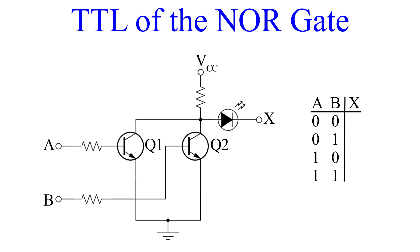On to the NOR gate. Let's turn on VCC. With inputs A equals 0 and B equals 0, both transistors are turned off, allowing current to only flow through the LED. With inputs A and B both 0, the output is 1.